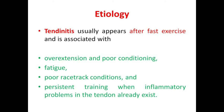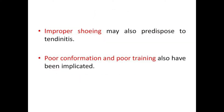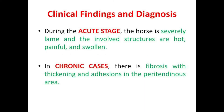Coming to the etiology, tendinitis usually appears after fast exercise and is associated with over-extension, poor conditioning, fatigue, poor race track conditions, and persistent training when inflammatory problems in the tendon already exist. Improper shoeing may also predispose to tendinitis, and poor conformation and poor training have also been implicated.